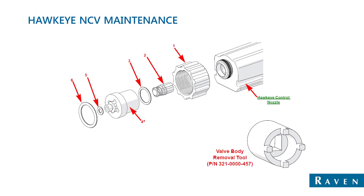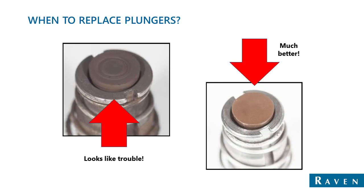This is a picture of the plunger assembly. The one on the left has been worn quite significantly — anytime the plunger assembly looks like that, you might get some leaking and not be applying as accurately as you could. The one on the right is brand new — that's what you'd be replacing with in your system.